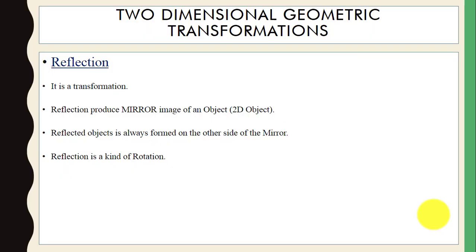Reflection is a transformation technique. Using reflection we can produce a mirror image of an object, and the reflected object is always formed on the other side of the mirror. It is also a kind of rotation.